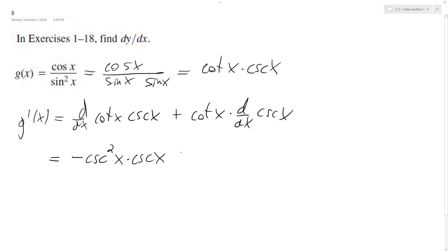Plus the derivative of the cosecant is equal to negative cosecant x cotangent x.